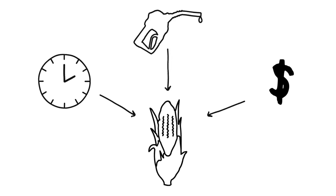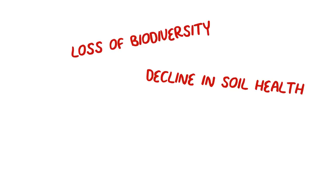Well, corn grain takes a lot of time, energy, and money to produce, and it can have a number of negative environmental impacts.